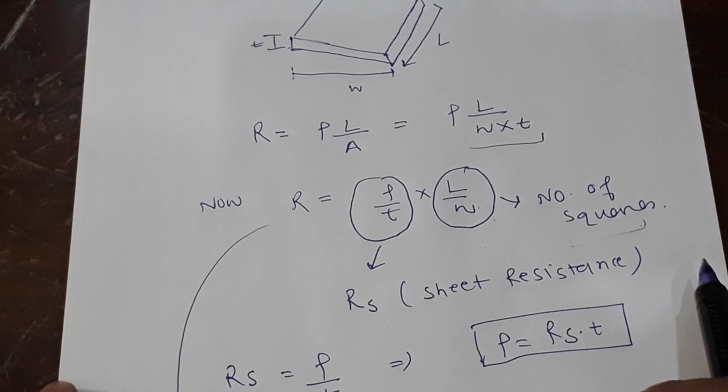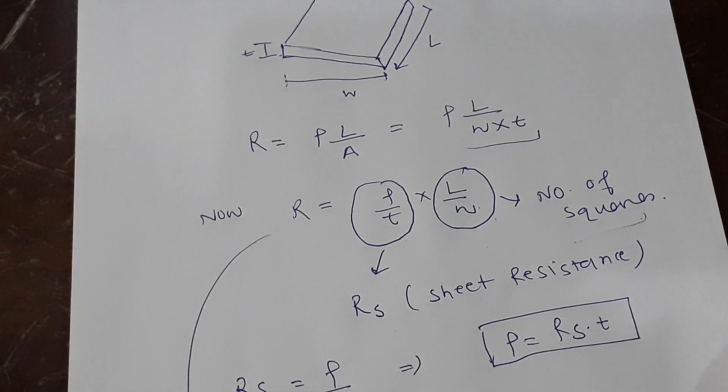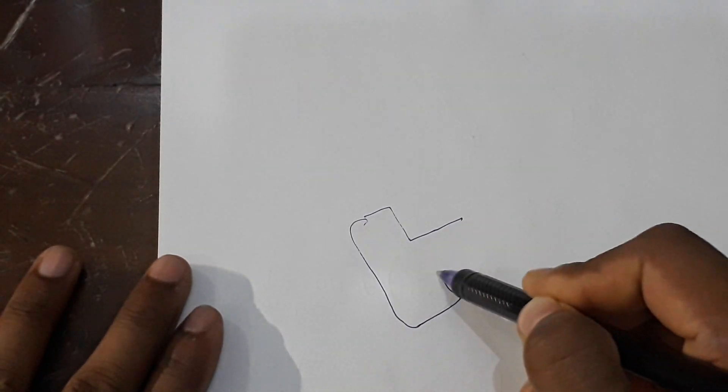So if you see this, it's like a resistivity which comes in very handy; it does not depend upon the material properties. This is very important to us. Now, people while designing Hall bars, they take care of these things very well.